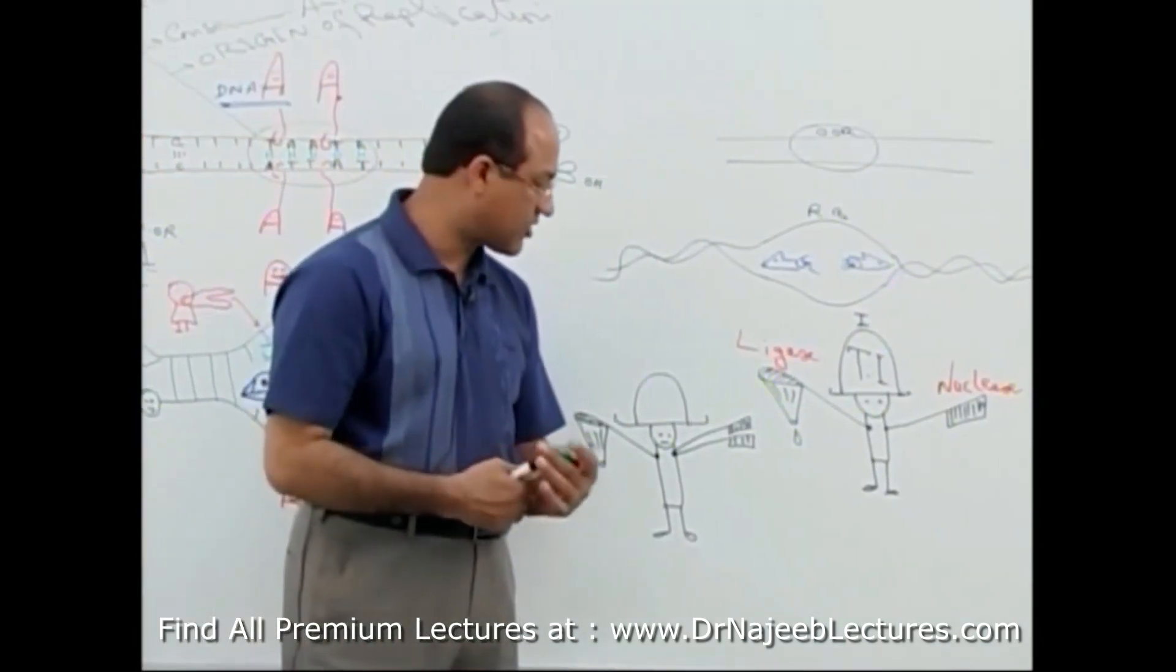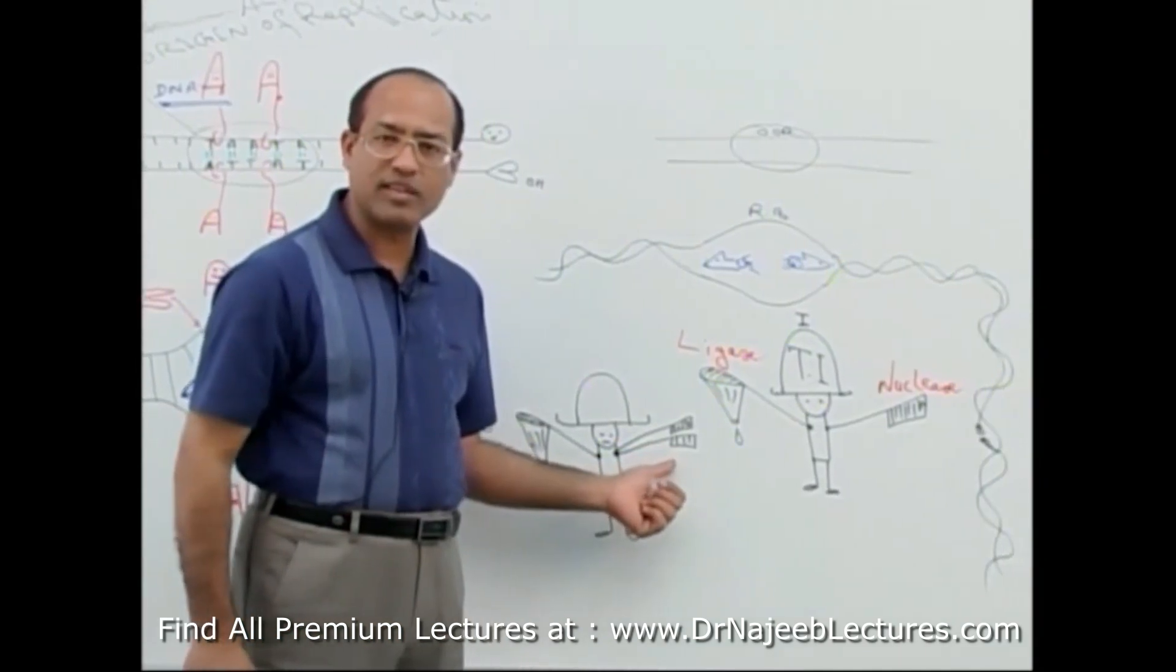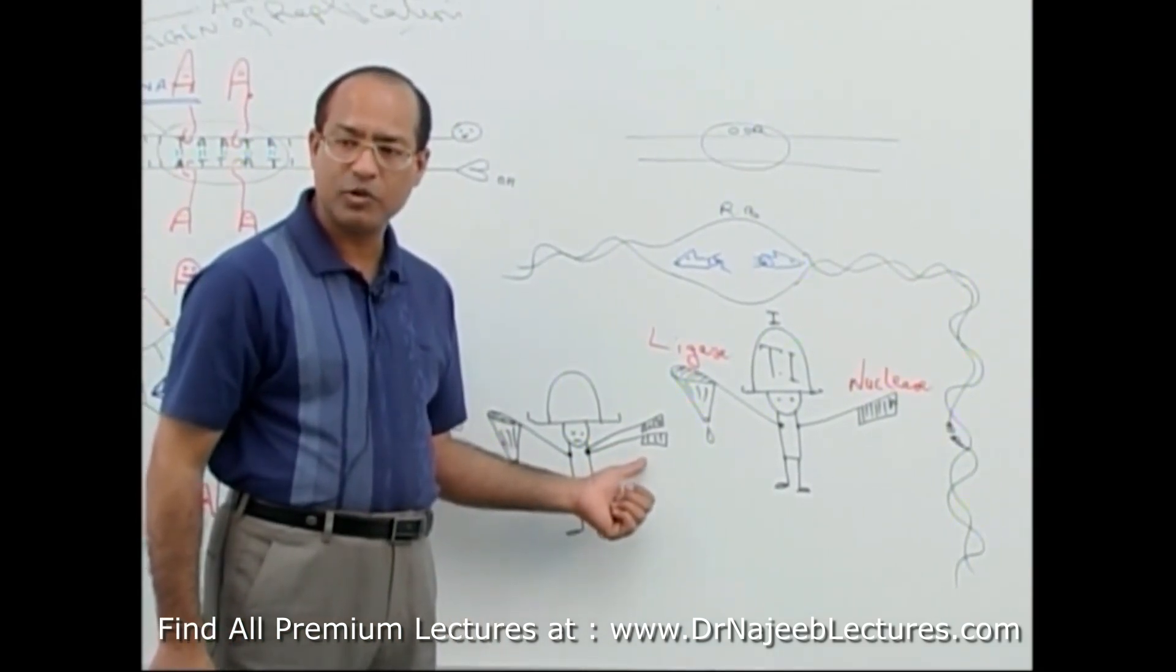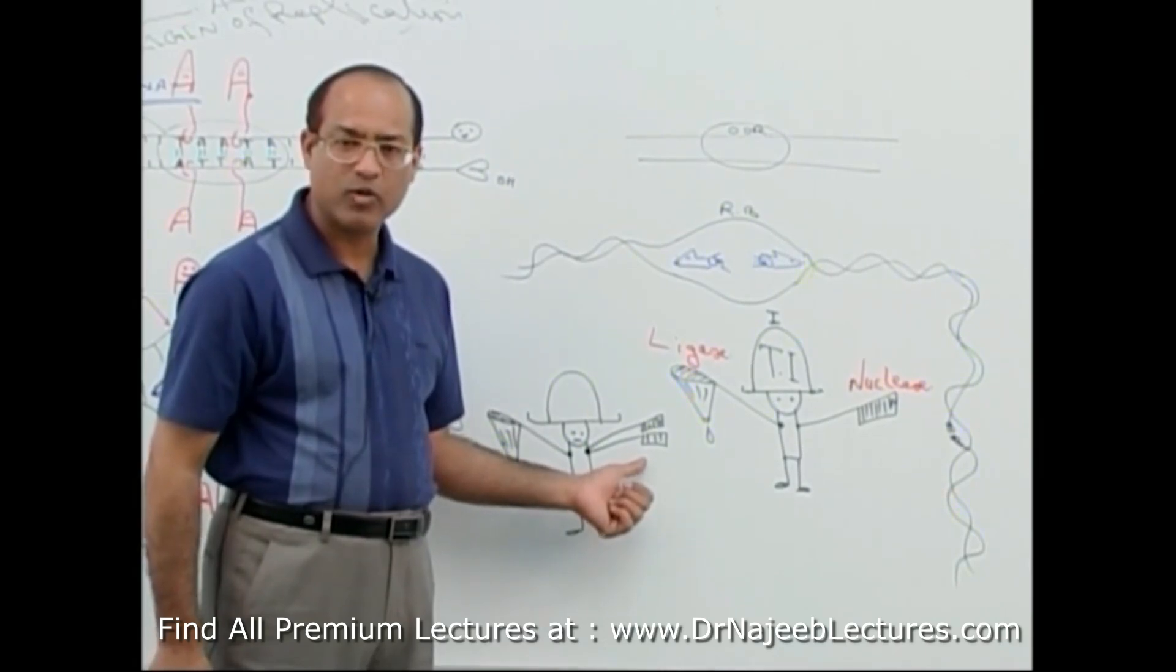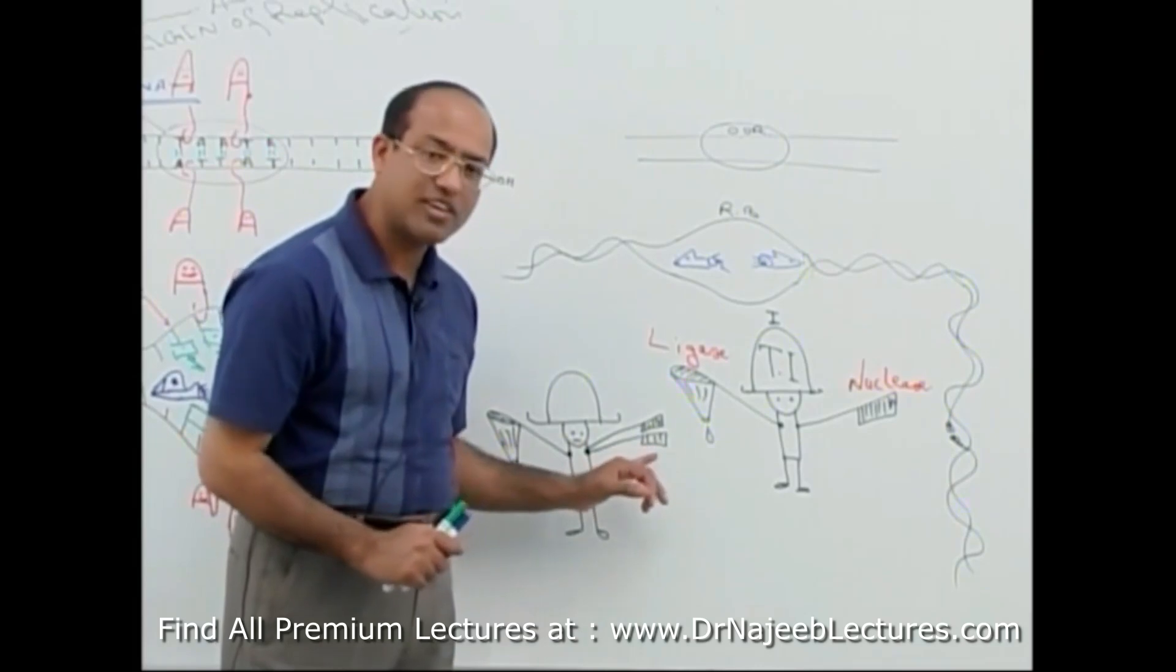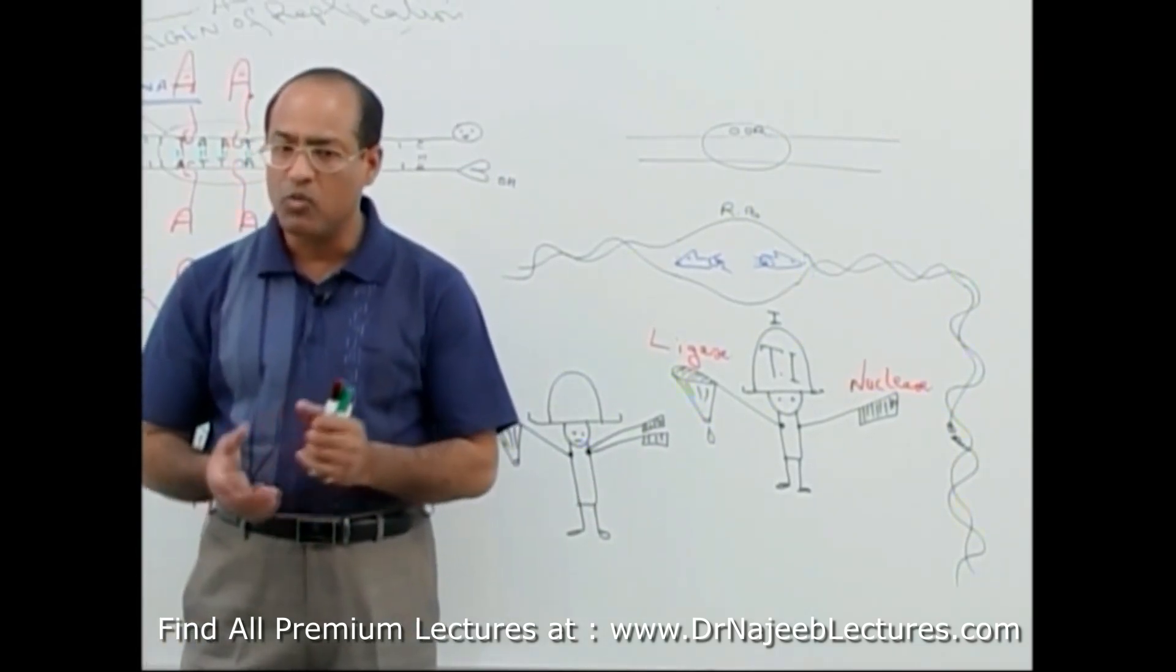Now it is too easy to understand. If it has two cutters, attention please, topoisomerase has two cutters, it will cut one strand or two strands? Both strands. Now look under what circumstances it is useful.